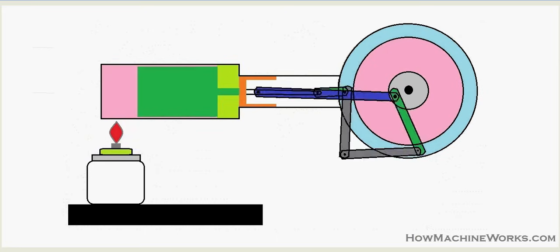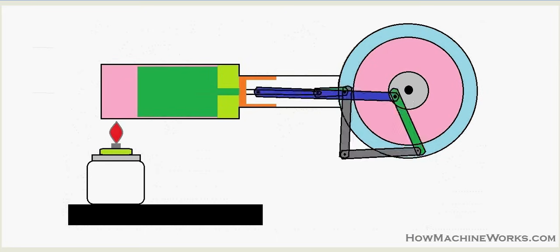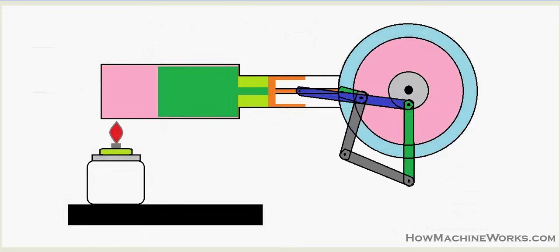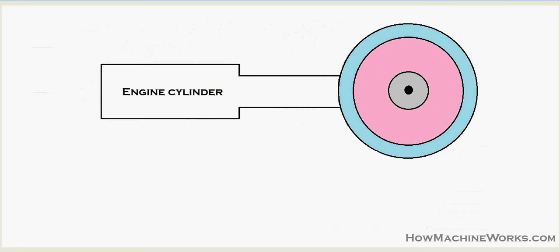Hi guys, welcome to HowMachineWorks.com. Today, with the help of this animation, let's learn how a Stirling engine exactly works. Let's identify all the components initially. We have the rotating disc over here, which functions as a flywheel in a normal engine, and then we have the engine cylinders over here.